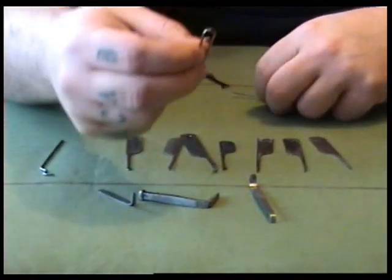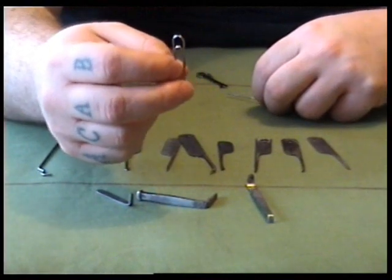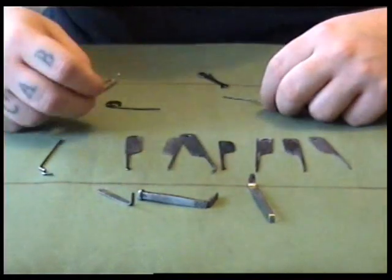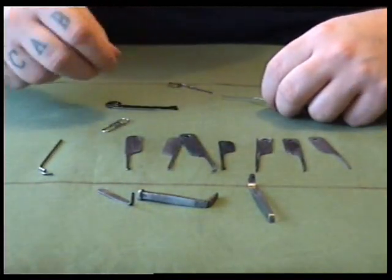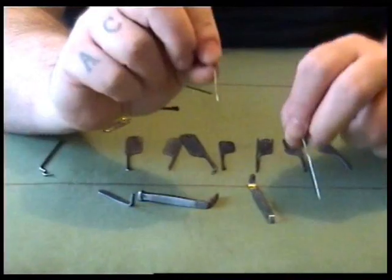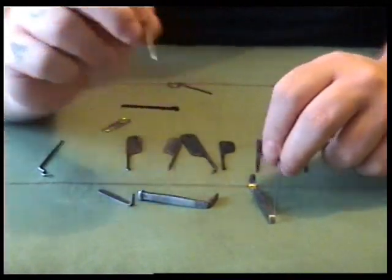And then paper clips, they can be used as a pick for very simple locks. Hairpin, any thin metal that can get into the lock and push the pins up.